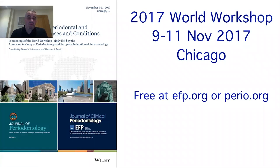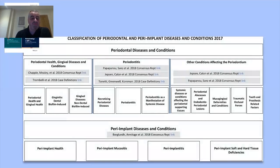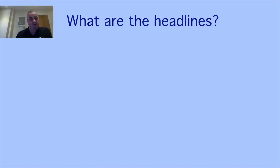The workshop that produced this classification was the 2017 World Workshop — a truly global event. The American Academy of Periodontology met with the European Federation of Periodontology, together with Australians, South Africans, and people from the Far East including China and Singapore. They produced a consensus report — a really huge body of work — the vast majority of which is fantastic and translatable to practice or research.